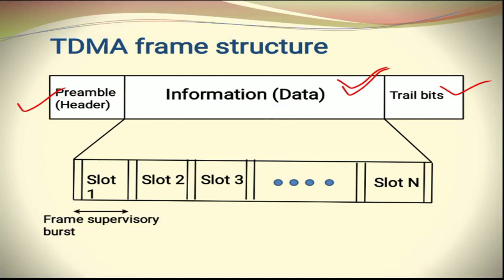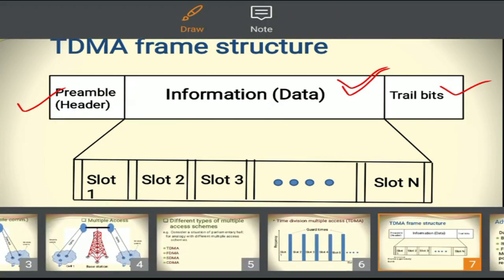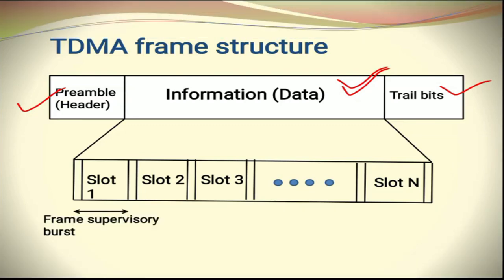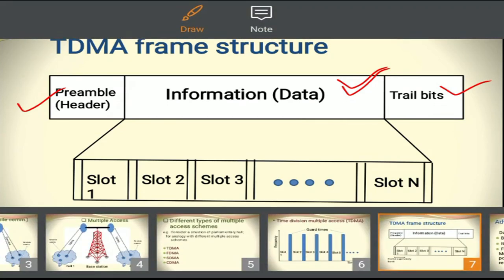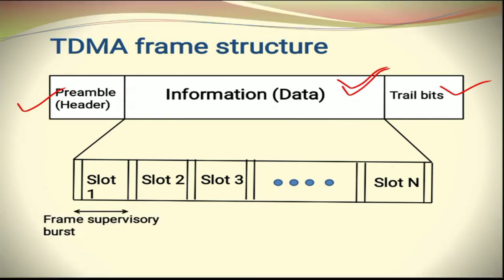The preamble indicates the start of the frame, provides the address of the user, and is also useful for synchronization. The trail bits indicate the end of the frame and signal that the station is ready to accept a new frame. This is all about the TDMA frame structure.